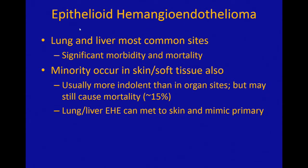Epithelioid hemangioendothelioma most commonly occurs in the lung and liver, where there is quite a bit of morbidity and mortality. Many of those patients undergo organ transplant to try to control their disease. It's a very serious disease, and a subset of those patients — sometimes up to 50% — will eventually die from their disease.